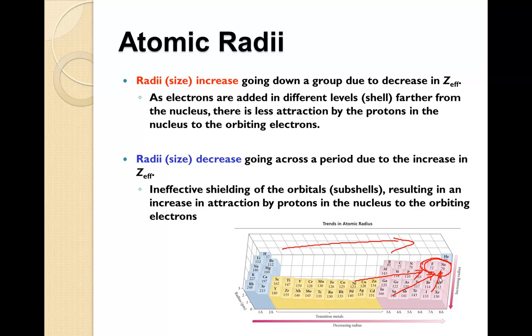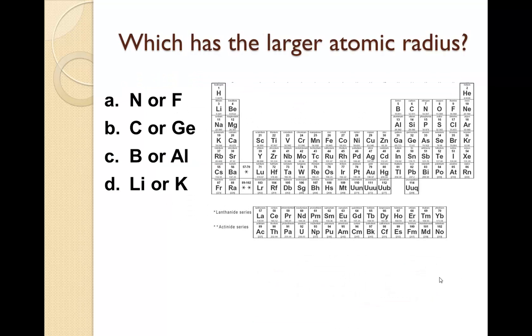So let's do some practice with this. Let's compare nitrogen and fluorine. Remember, the radii decreases as you go from left to right and it decreases as you go from bottom to top. So it gets smaller as you get closer to this corner. So nitrogen and fluorine, since fluorine is more to the right, nitrogen is going to be larger.